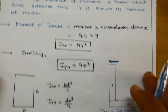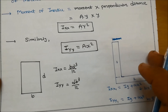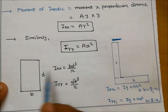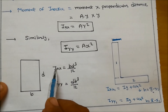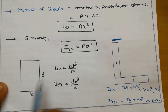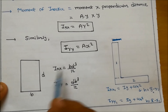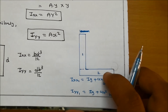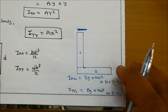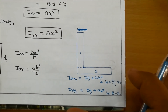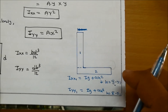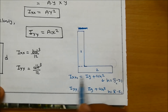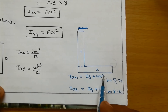For a rectangle, the moment of inertia about the xx-axis, Ixx, is equal to Bd cubed divided by 12. Whenever we consider a whole section made up of a combination of parts, we use the parallel axis theorem: Ixx equals Ig plus Ah square.